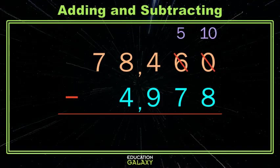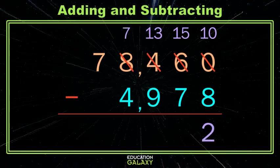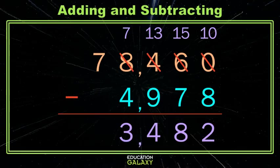Still can't take 7 away from 5, so looking at the hundreds, I'm gonna steal one of those, which gives me 10 more tens, and leaves me with 7 in the thousands place. Now we're all ready. 10 minus 8 is 2, 15 minus 7 is 8, 13 minus 9 is 4, 7 minus 4 is 3 — and don't forget your comma. And lastly, 7 minus nothing is 7.